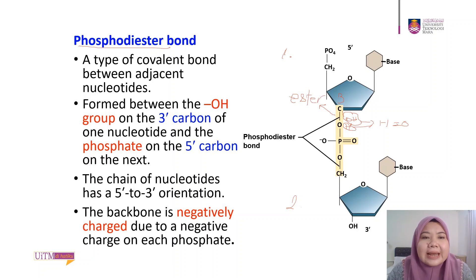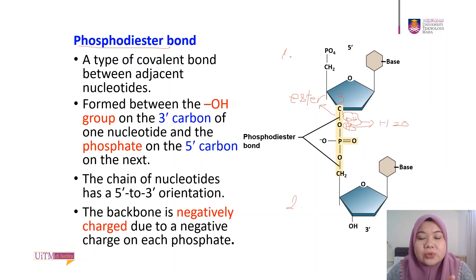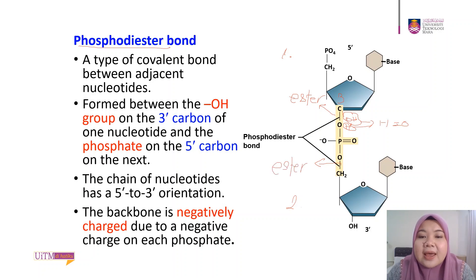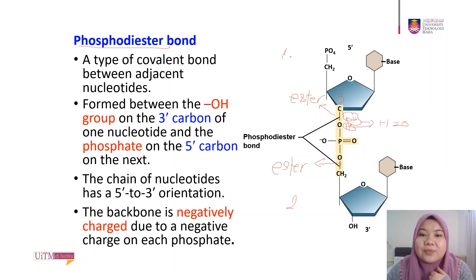Because the name is phosphodiester bond, 'di' means two — so where is the other ester bond? The other ester bond is on the other side, where you also have a C–O connection, another ester bond. With phosphate in the middle, we have phospho-di-ester bond. That's how we get the name: the phosphodiester bond.